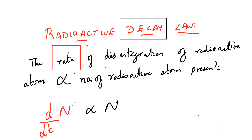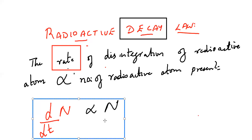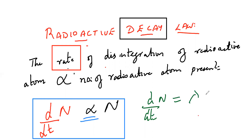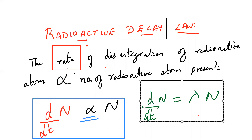Whenever you get rate in the question, it is d by dx or here with respect to time, d by dt, and n is proportional to n. To remove the proportionality symbol, we write dn/dt = −λn, where lambda is called the decay constant.